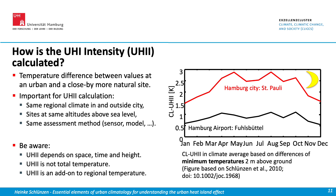This is different at nighttime, where the climate average shows that the city center has urban heat island values of two and a half to three degrees. Be aware that the urban heat island intensity depends on space — shown here with two lines for the city center and the suburban airport — and on time, such as the annual cycle, and it also depends on height. This is the canopy layer urban heat island, measured at about two meters above ground.